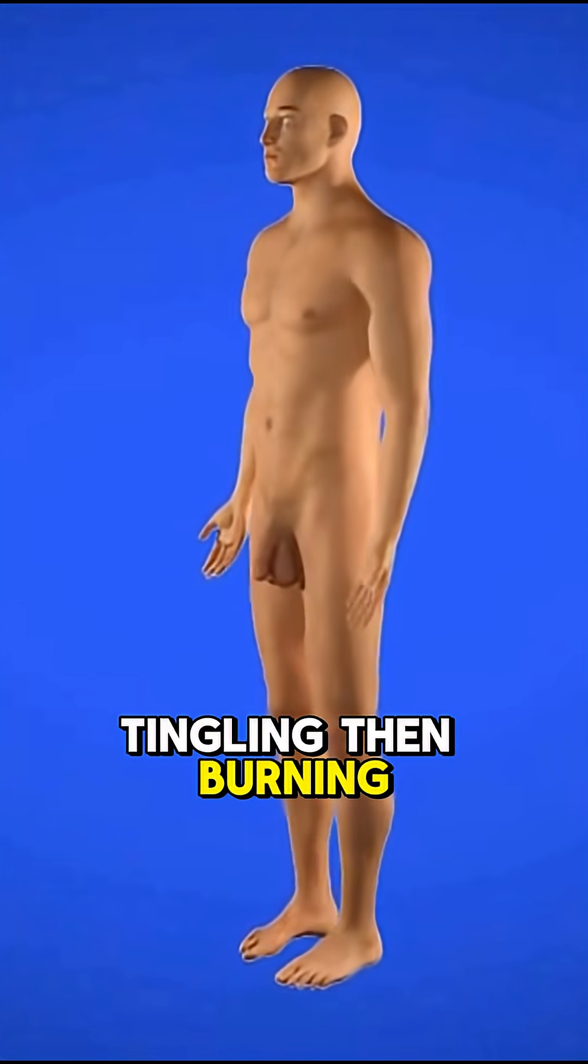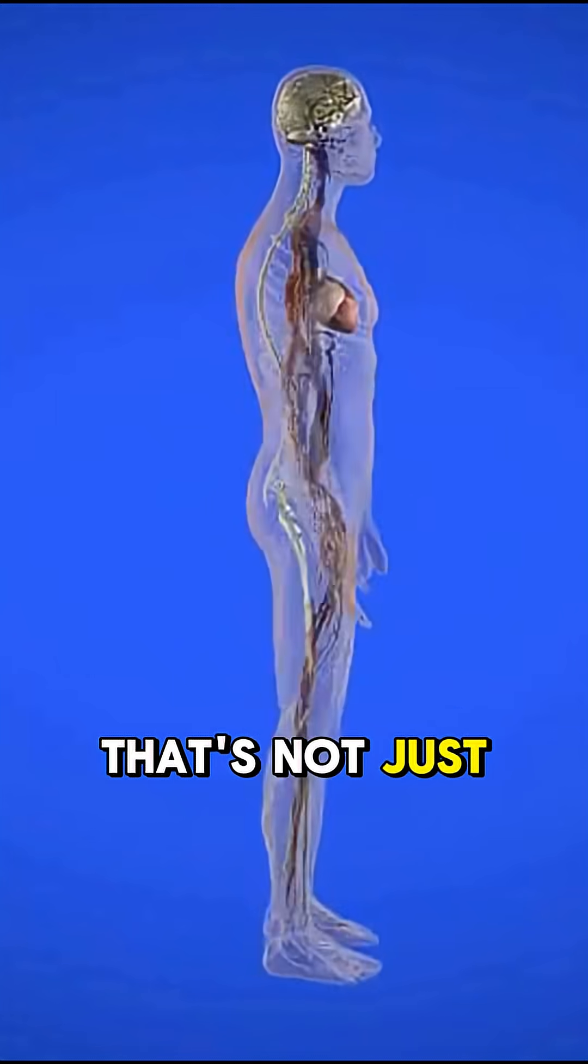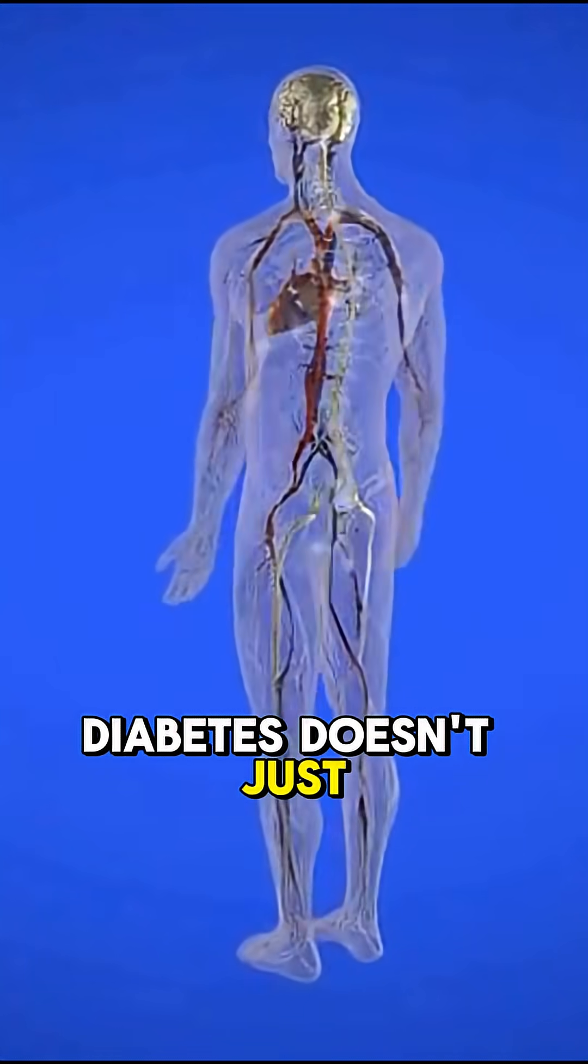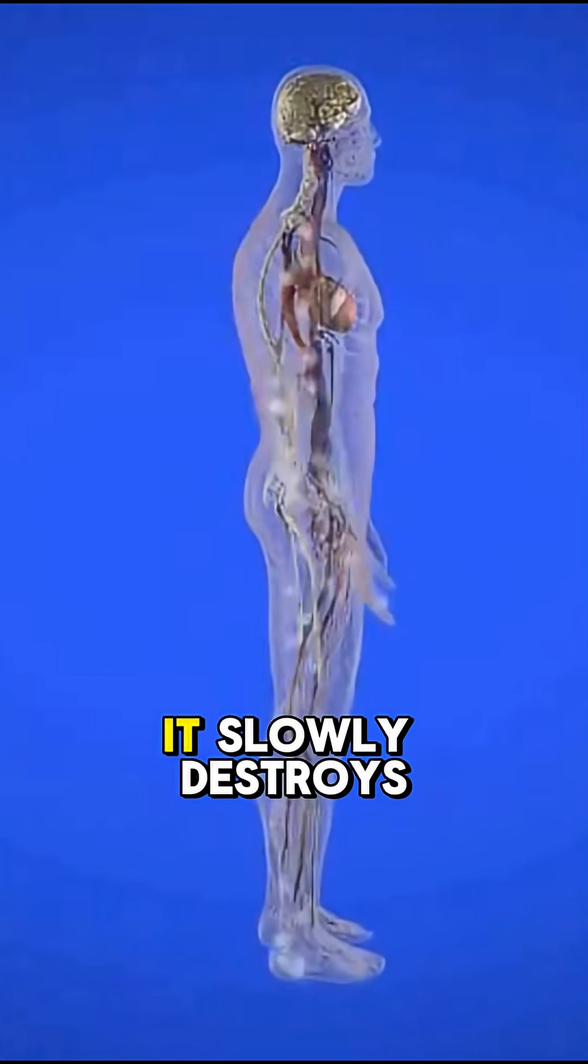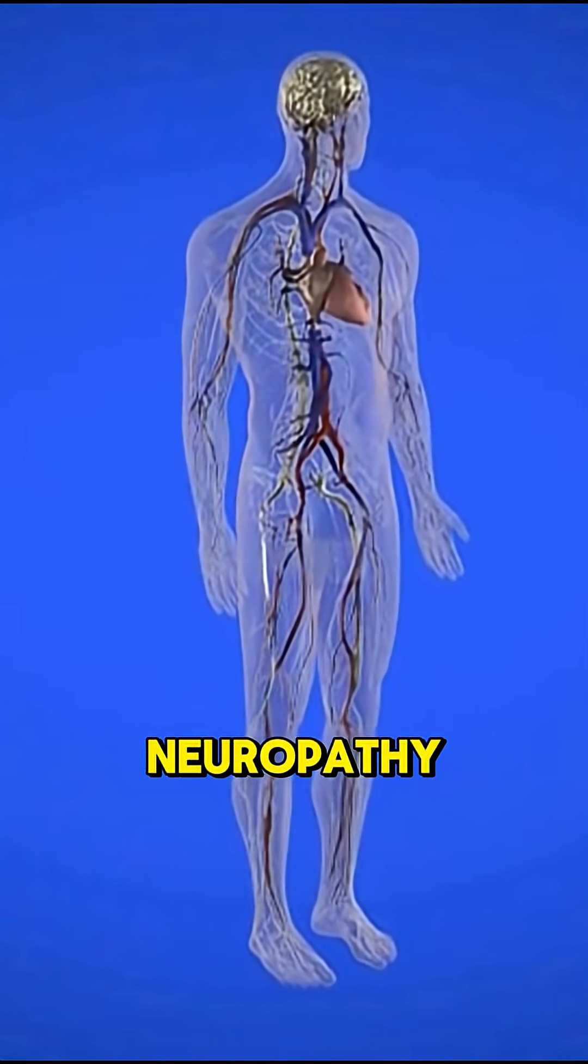Your toes start tingling, then burning, then you can't feel them at all. That's not just diabetes—that's your nerves dying. Diabetes doesn't just mess with your blood sugar; it slowly destroys your nervous system. It's called diabetic neuropathy.